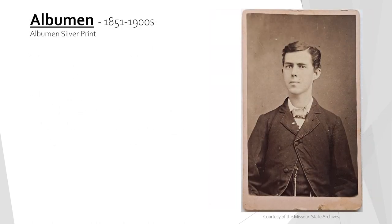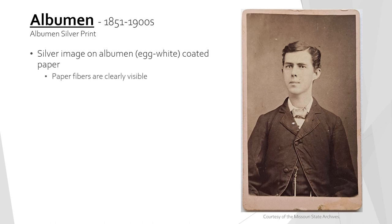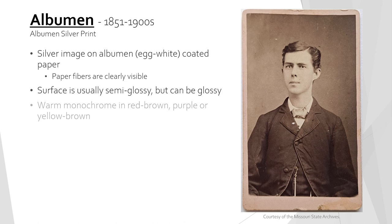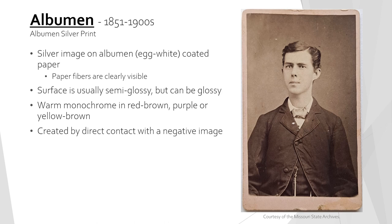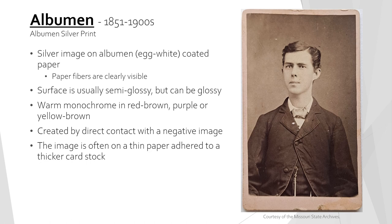Albumen prints were created from 1851 to the 1900s. They consist of a silver image on an albumen, or egg white, coated paper. Despite the coating, the paper fibers will be clearly visible. The paper will most often have a semi-glossy appearance but can occasionally be glossy. The image is a warm-toned monochrome with a red-brown, purple, or yellow-brown hue. Similar to salt prints, albumen prints are created from direct contact with a photographic negative. The print is often made on a thin piece of paper that has then been adhered to a thicker cardstock.